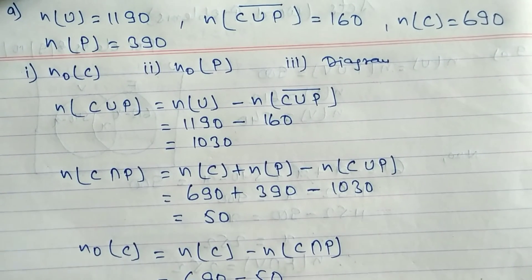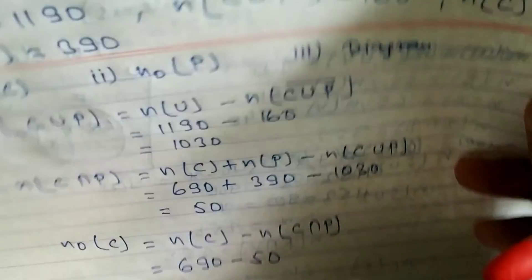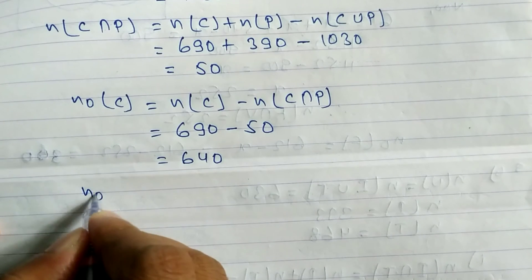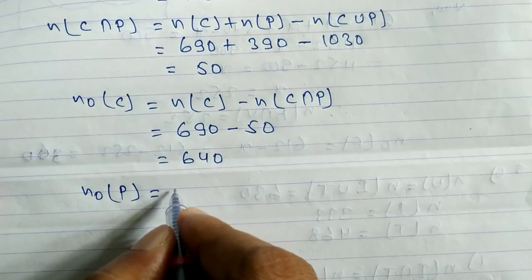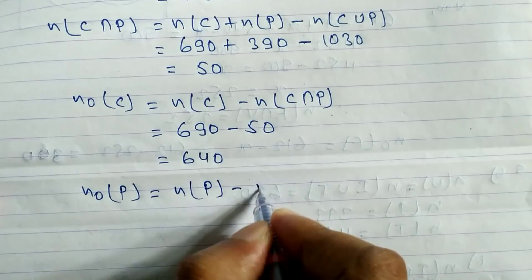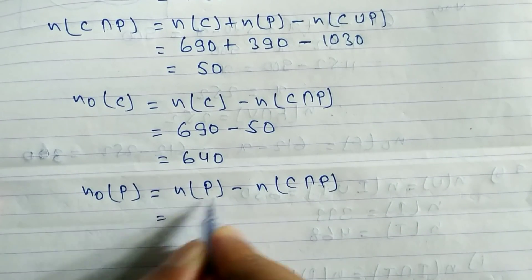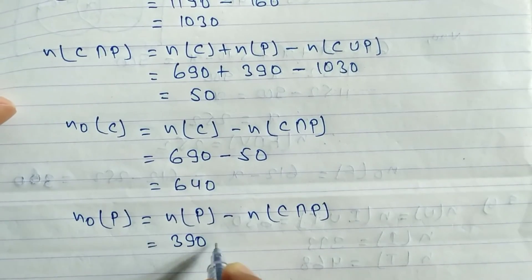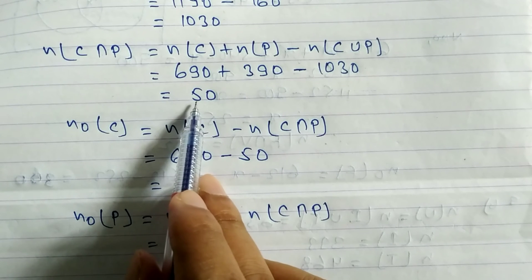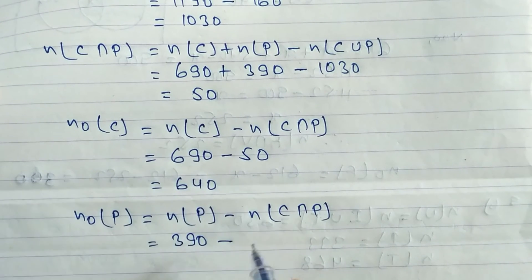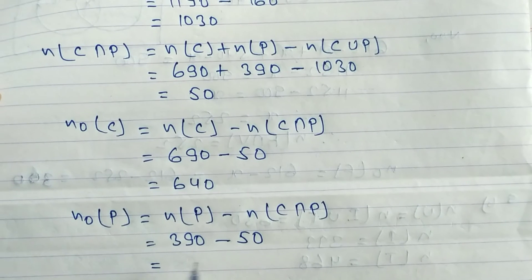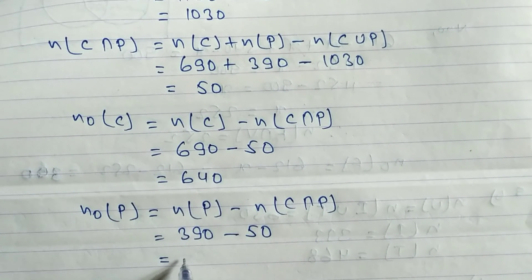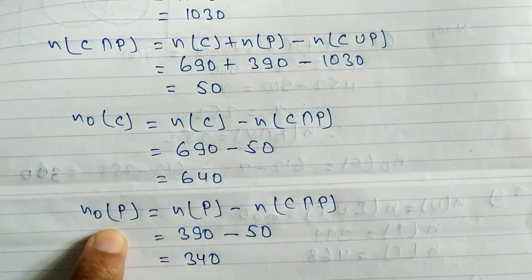So 640 students like Coke only. Now for Pepsi only: N(only P) equals N(P) minus N(C intersection P) equals 390 minus 50 equals 340. So 340 students like Pepsi only.